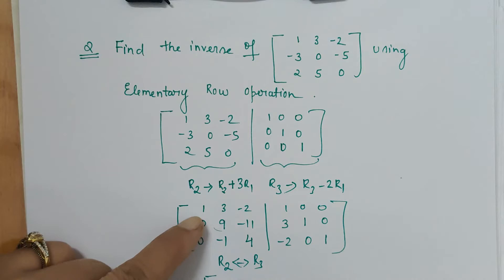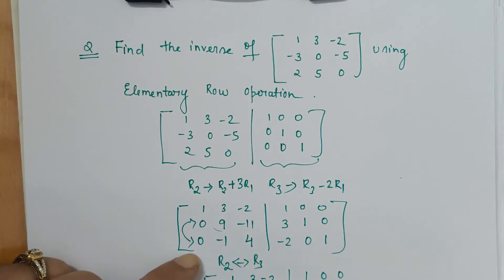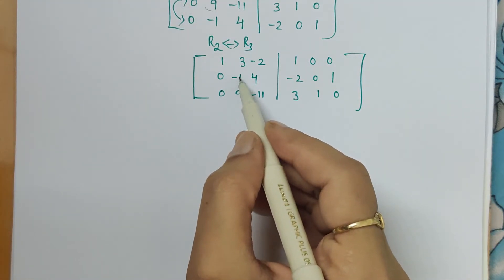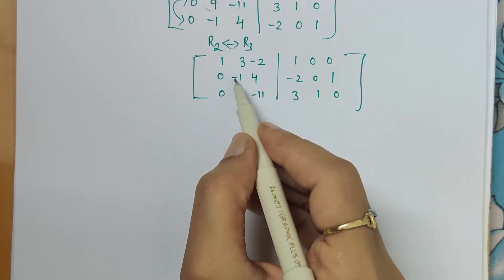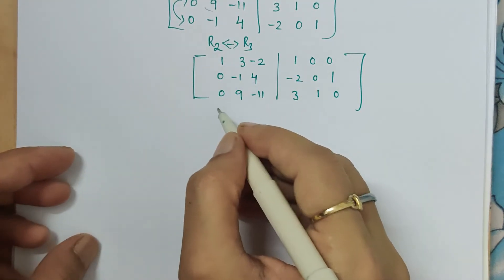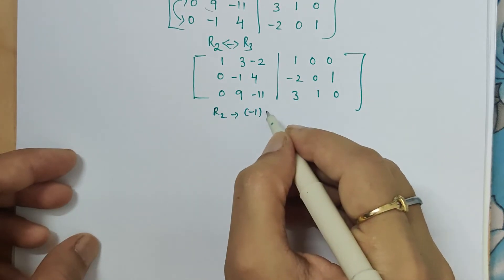So the new augmented matrix which we get is this. Here in second row now we will have third row: 0, minus 1, 4, minus 2, 0, 1, and 0, 9, minus 11, 3, 1, 0. Now I want 1 over here. After swapping, we easily got minus 1. Now this negative should not be there. So we will multiply the complete row by negative sign. In R2, we are multiplying with minus 1.